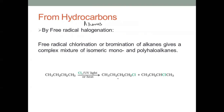From alkanes, haloalkanes are prepared by free radical halogenation. For example, taking n-butane and reacting with Cl2 in the presence of UV light, we get a mixture of chloroalkanes. There are two types of hydrogen in butane, and either can be substituted with Cl, giving a mixture of products — but one will be the major product.